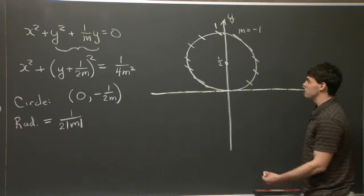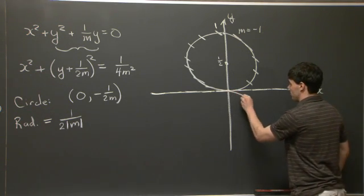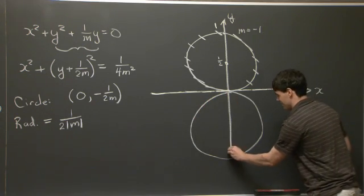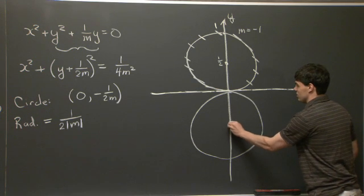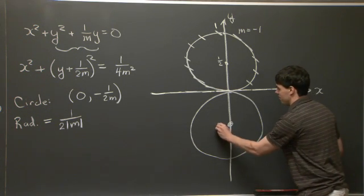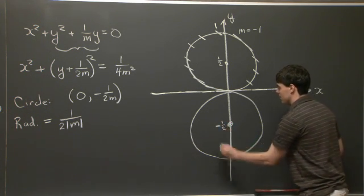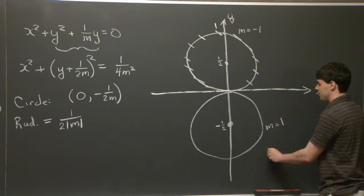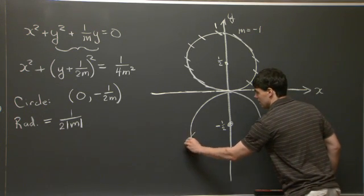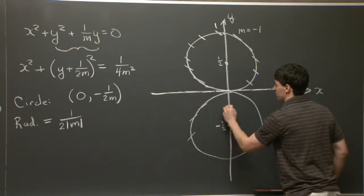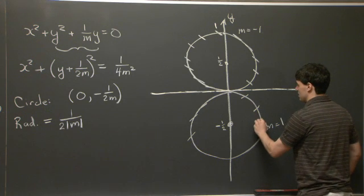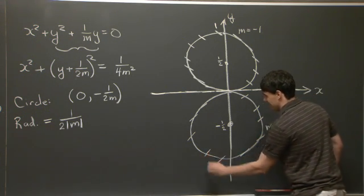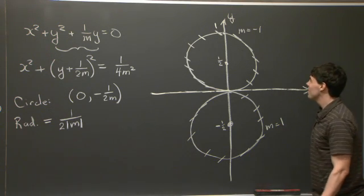Now, in addition, we can also get another circle, which is centered at negative 1 half. And this corresponds to the isocline of m equals plus 1. And every point on this circle has slope plus 1. Those should all be the same.